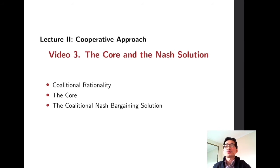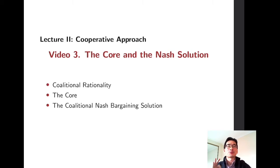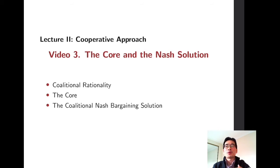Last time we introduced two basic desirable properties in allocation problems: efficiency and individual rationality. In this video we are going to further introduce coalitional rationality and the core allocation, then we are going to introduce the coalitional Nash bargaining solution, or Nash solution in short.